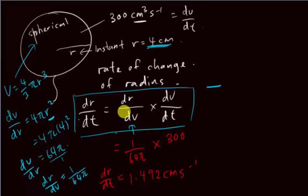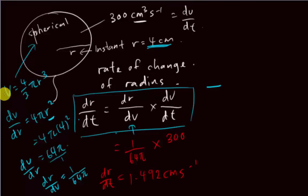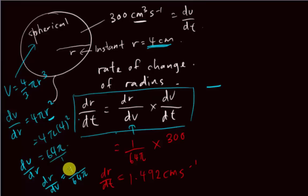A lot of students when they see something like dr/dV have no idea how to do it, or some students try to make r the subject and differentiate, but that is very hard because you end up with a cube root raised to the power one-third and the whole differentiation becomes very hard. I recommend this method: differentiate first to get dV/dr, then flip over to get 1 over something. But not all the time the question will look this easy, so let me give you another example.